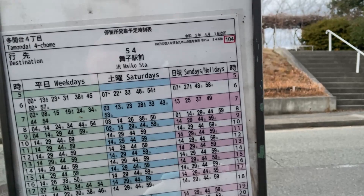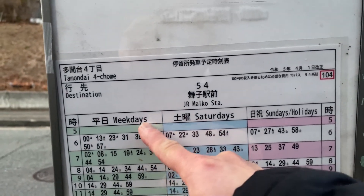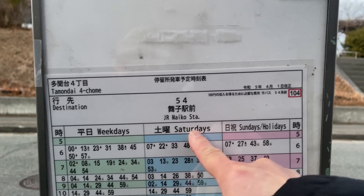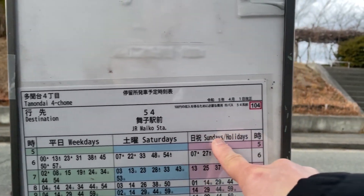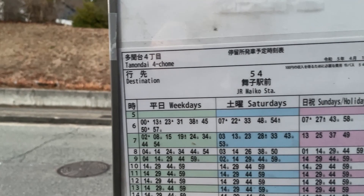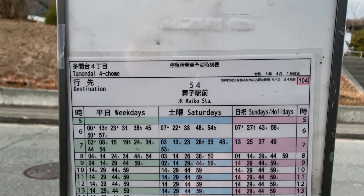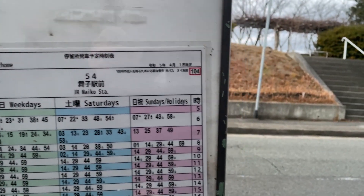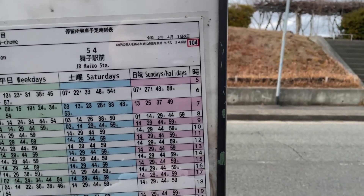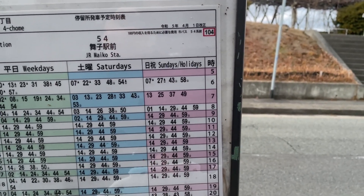On the left you have the weekday schedule, the Saturday schedule, and the Sunday and holiday schedule. These are the hours and the minutes. So let's say that I wanted to catch a bus at 5:30 or 5:40.